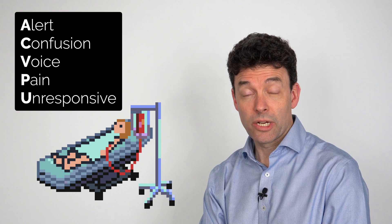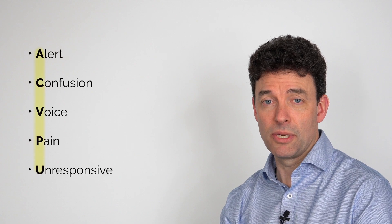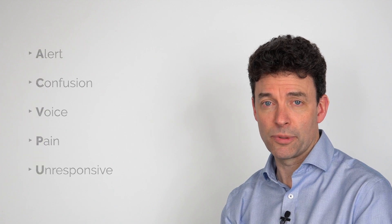This is a quicker and easier assessment than a full GCS score. AVPU is an assessment of conscious level and response to stimuli. It is spelled A C V P U but pronounced AVPU.